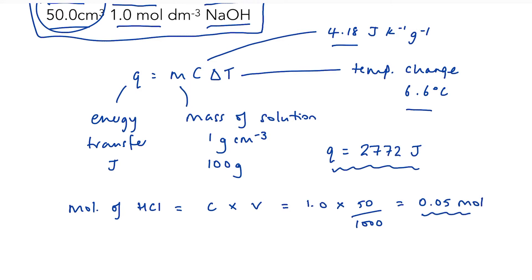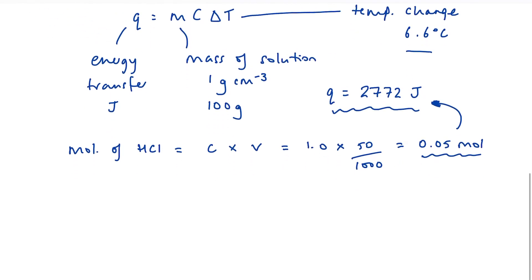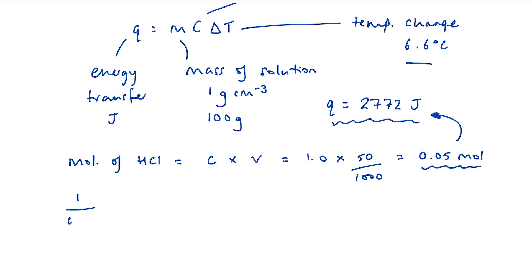So I know now that 0.05 moles gives me 2772 joules worth of heat. So how much would 1 mole give me? Well, I just need to, once again, scale up. So 1 over 0.05 times 2772 is equal to 55,440 joules per mole. And if I divide that by 1,000, 55.4 kilojoules per mole. Once again, it's an exothermic reaction. The temperature went up, so I need to remember to put in my negative sign.